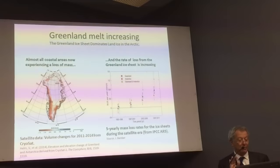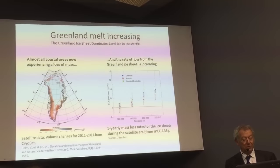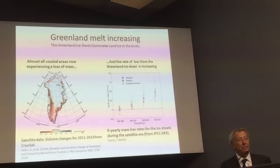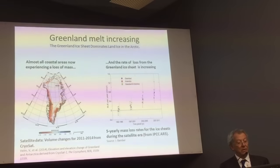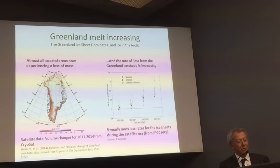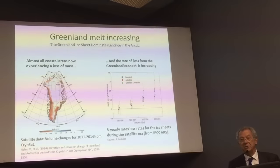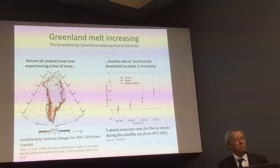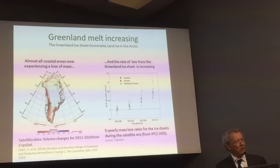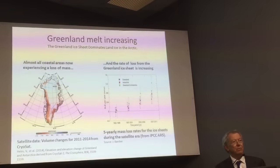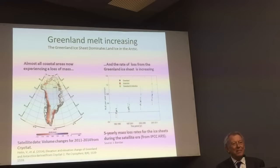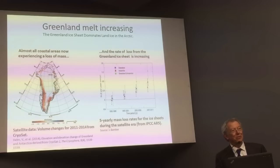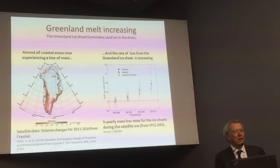What we see in the left-hand diagram is a clear indication that the volume changes of ice on Greenland from 2011 to 2014 show that virtually all coastal regions are now experiencing a loss of mass. We can discuss the physical method of this happening — the calving process — the loss of great big chunks of ice that float away as icebergs, rather than the gentle slow melting that you see when you take an ice cube out of the refrigerator and put it on a saucer.